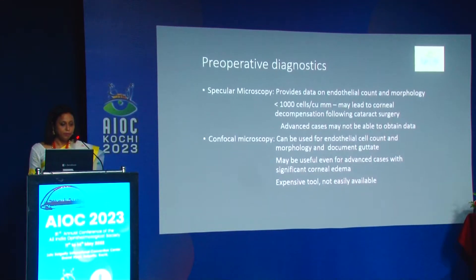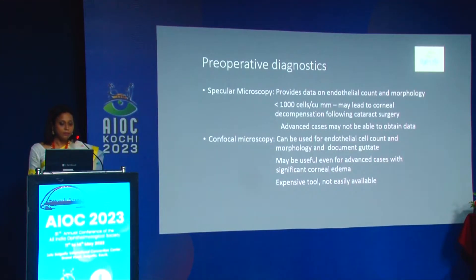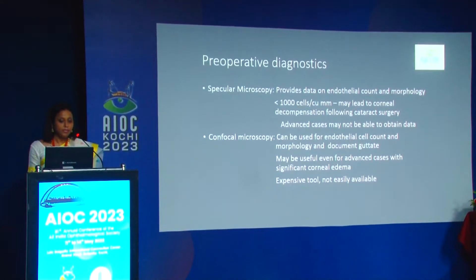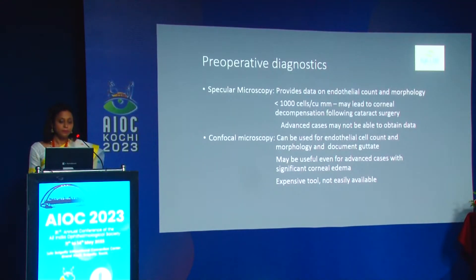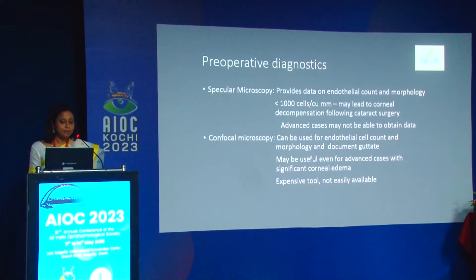Apart from clinical examination, important preoperative diagnostics include specular microscopy, which provides data on endothelial cell count and morphology. Usually less than 1000 cells may lead to corneal decompensation, and this needs to be explained to the patient. However, in advanced cases you may not obtain any data, and under such circumstances confocal microscopy can be used — it gives endothelial cell count, morphology, and can document guttae, and is useful even in advanced cases.